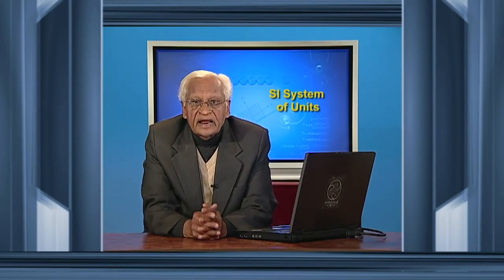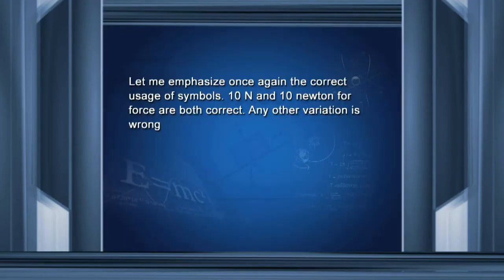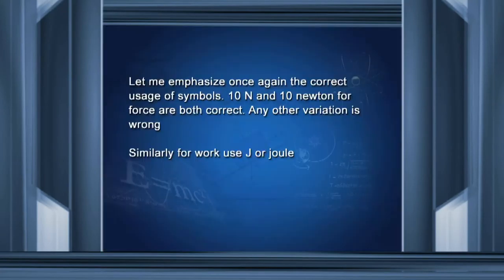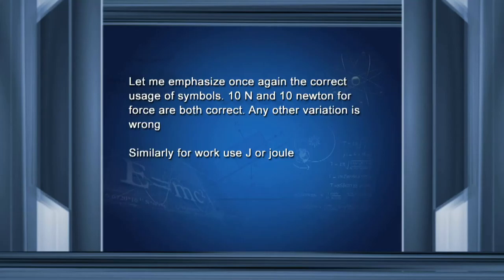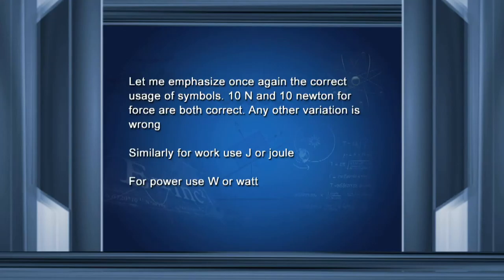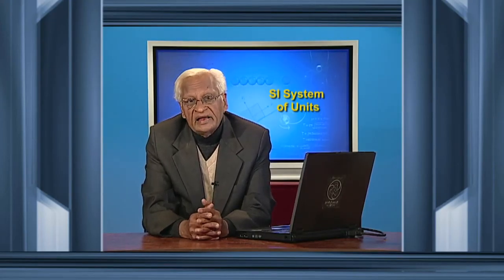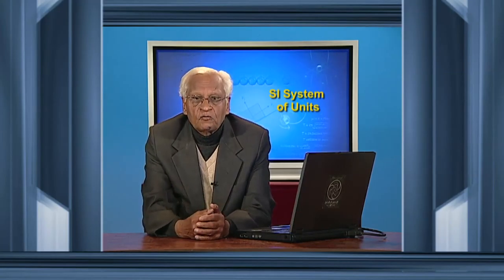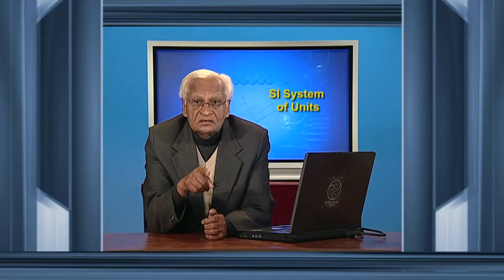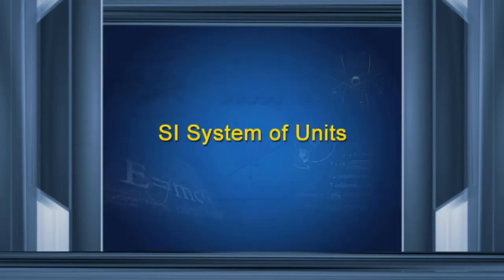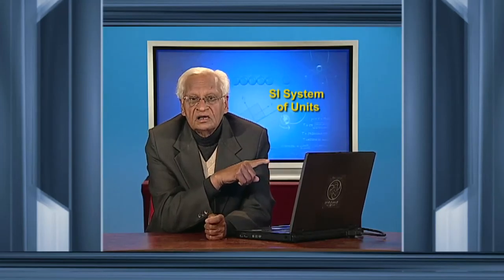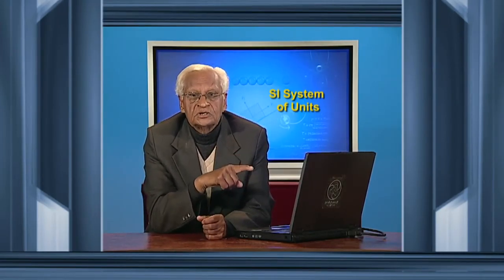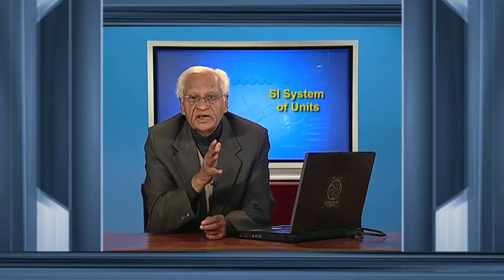Let me emphasize once again the correct usage of symbols. 10 capital N or 10 newton with small n for force are both correct — any other variation is wrong. Similarly, for work, capital J or joule with small j are correct. For power, use capital W or watt with small w. There are several countries where people still use miles, feet, and pints, but the scientists of those countries always use the SI system. For scientific work, SI system is the only system used throughout the world, so you must get used to using it.